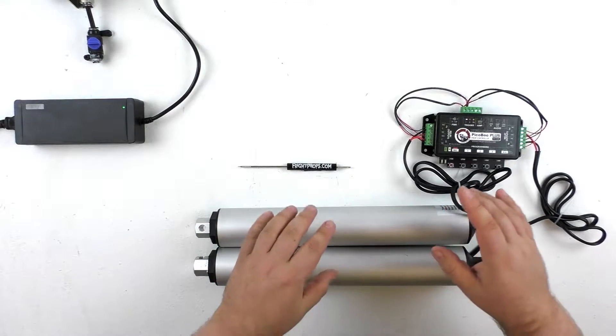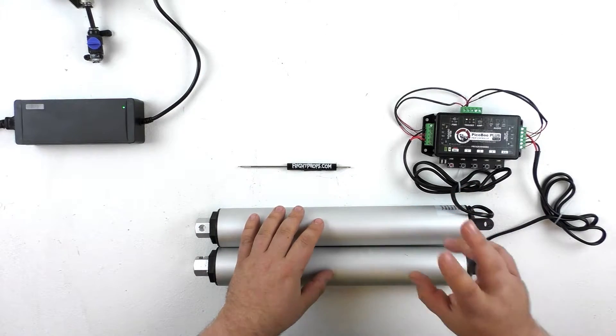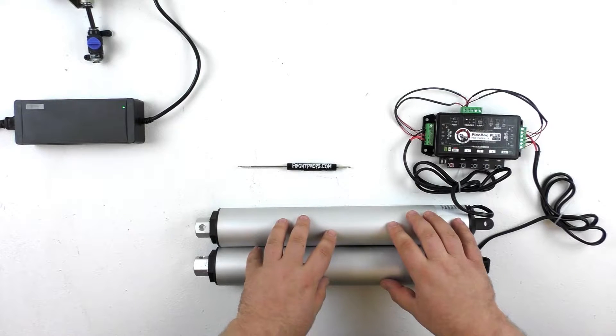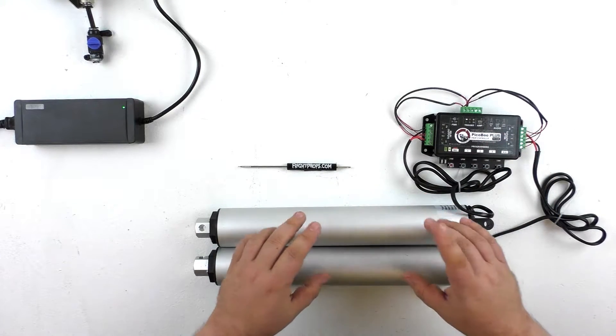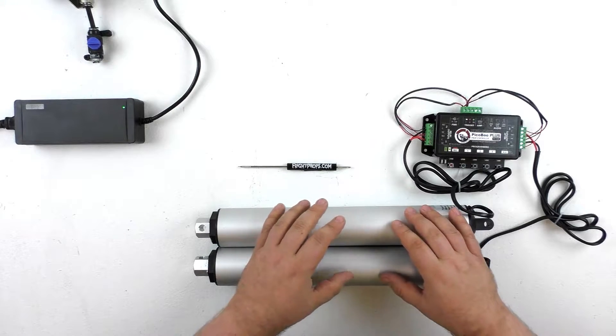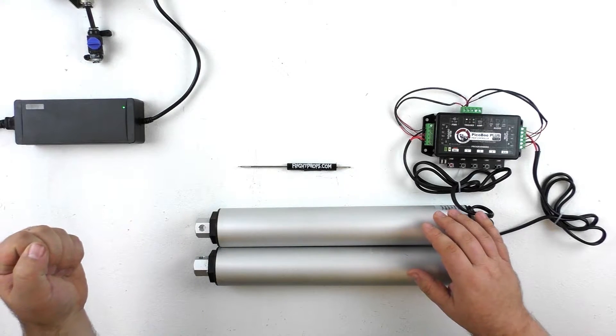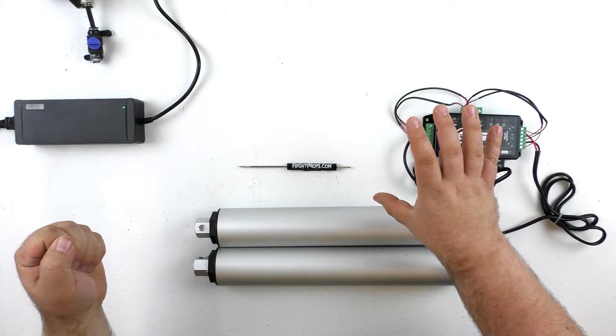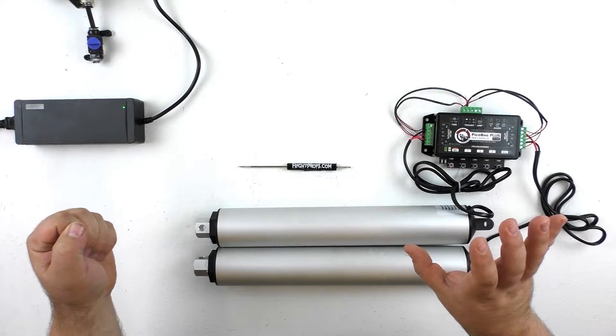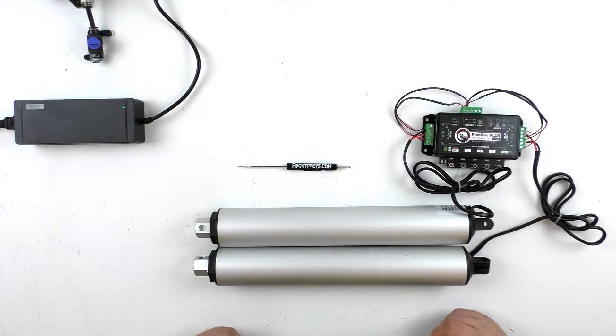We had a customer contact us and he wanted to know how he could create a prop that had two movements using two linear actuators and one controller. The example that he gave is he wanted to have a character open a window curtain with one hand and then move their head to look out the window, then move the head back and have the other hand close the window curtain again.